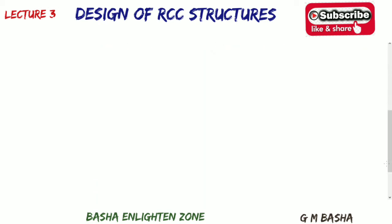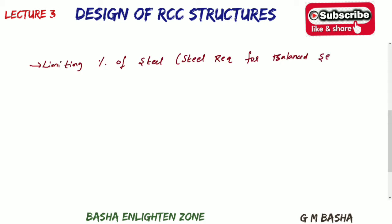Now, limiting percentage of steel — this is the steel required for the balanced section, denoted as P-balance. The formula is: P-balance = 100 × area of steel / (B × D), where B is the width and D is the effective depth. It is better to remember these formulas directly, as code books are not allowed in competitive examinations.